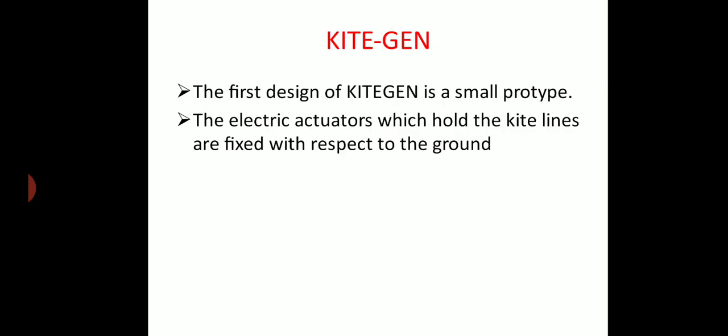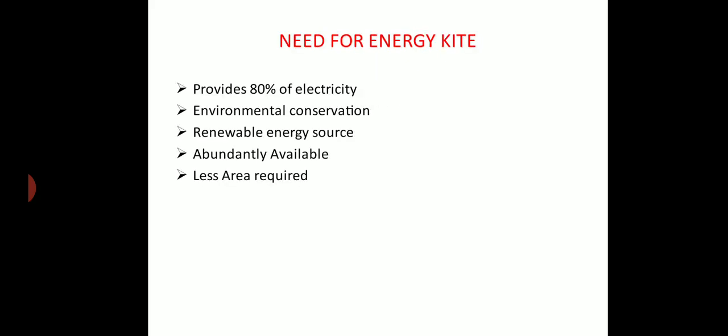Kite generation: The first design of kite generation is a small prototype. The electric actuators which hold the kite lines are fixed with respect to the ground. Need for kite energy: We need energy kites and kite power generation because it provides 80% of electricity and environmental conservation, is a renewable energy source, the energy resource is abundantly available, and requires less area for installation.